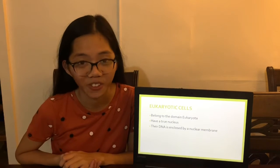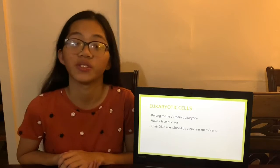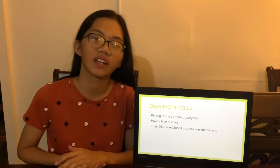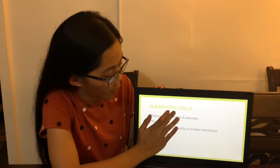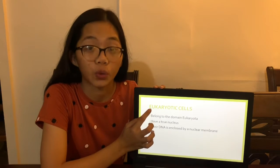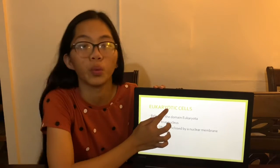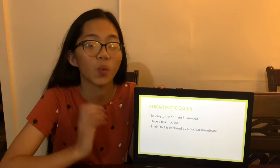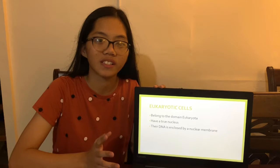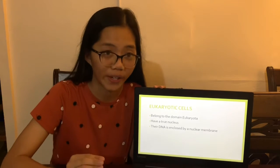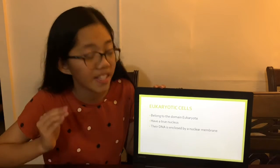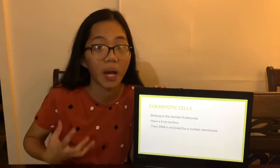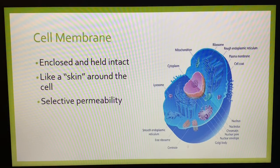Now let us discuss eukaryotic cells. Eukaryotic cells belong to the domain Eukaryota. The word 'eukaryotes' comes from 'eu' meaning true, and 'karyon' meaning nut or nucleus — that's why they are called eukaryotic, because they have a true nucleus. Their DNA is also enclosed by a nuclear membrane.